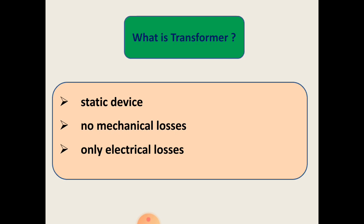What is a transformer? Transformers are most highly efficient electrical devices. A transformer is a static device and we do not see any movements in its parts, so no mechanical losses exist and only electrical losses are observed in the transformer.